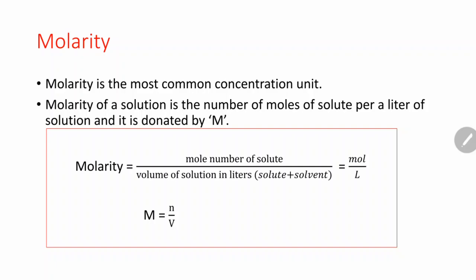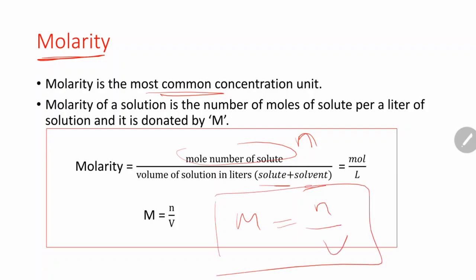Now the most important concentration unit: molarity. Molarity is the most common concentration unit — we will need it to understand most concepts in chemistry. Molarity of a solution is the number of moles of solute per liter of solution, denoted by M. The formula is: molarity (M) = moles of solute (n) divided by volume of solution in liters. Note: use the total volume of solution, not just the solvent.